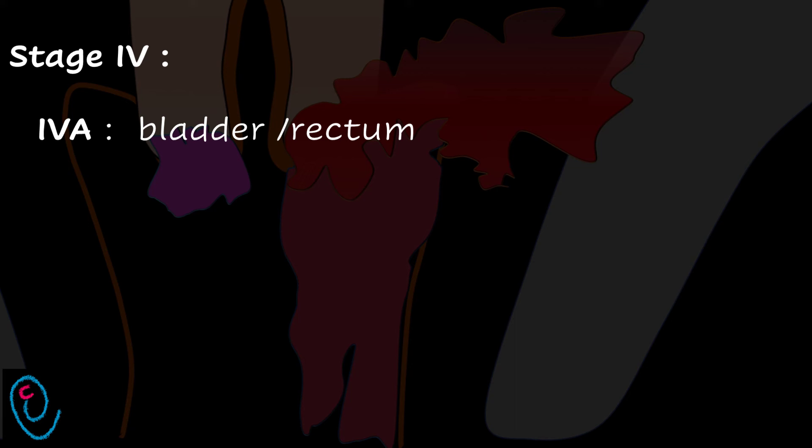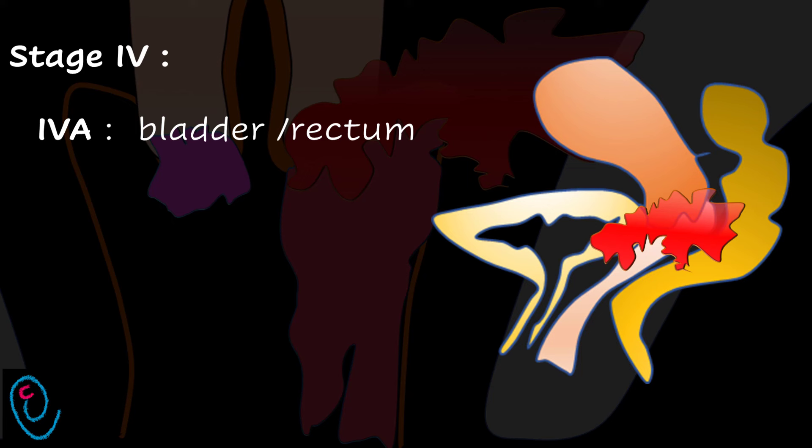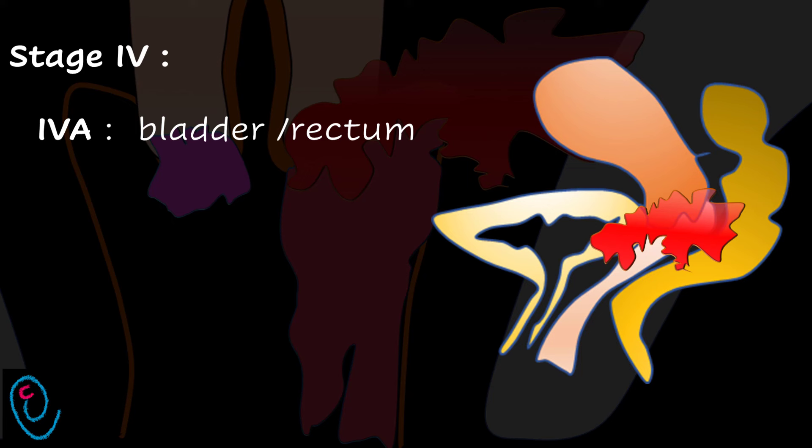Stage 4a involves spread to adjacent organs, like the bladder or rectum. While stage 4b involves spread to distant organs.